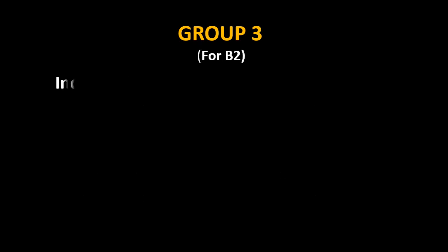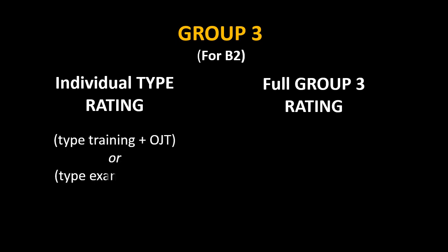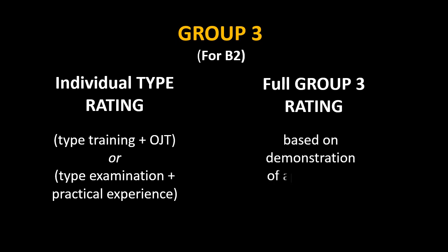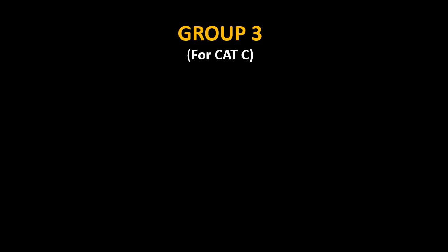If your category is B2 and the aircraft falls in Group 3, then you can have individual type rating or full Group 3 rating. For individual type rating you either need type training plus OJT, or type examination plus practical experience. However, for full Group 3 rating, it will be based on demonstration of appropriate experience.